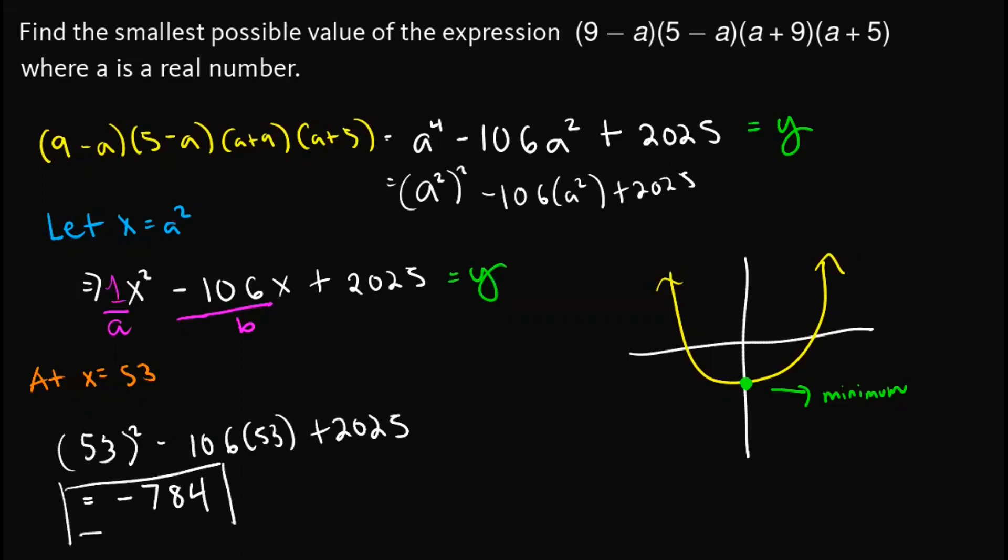And that is the answer for this problem. Why? Since we know that this one is equal to y, but y is equal to this whole expression, which again is equal to this one. Which means that we have found the smallest possible value of our original expression.